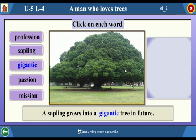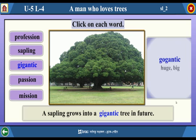Gigantic — A sapling grows into a gigantic tree in the future. Meaning? Huge. Big.